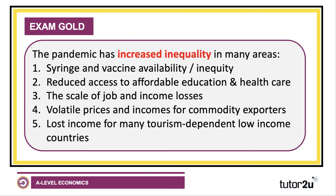One of the key things to be aware of heading into 2022 and exams is that the COVID pandemic has increased inequality in many countries, both within and also between countries. One concern, for example, is the huge inequity in syringe and vaccine availability and deployment, particularly between high-income nations and low-income countries. The pandemic has severely hit access to affordable education and health care in many countries, which obviously affects human development. The scale of job and income losses has been very large, and so too the volatility of prices and incomes for countries dependent on commodity exports. And many low-income countries, heavily dependent on tourism and travel, have lost income as the global tourist sector has been hit.